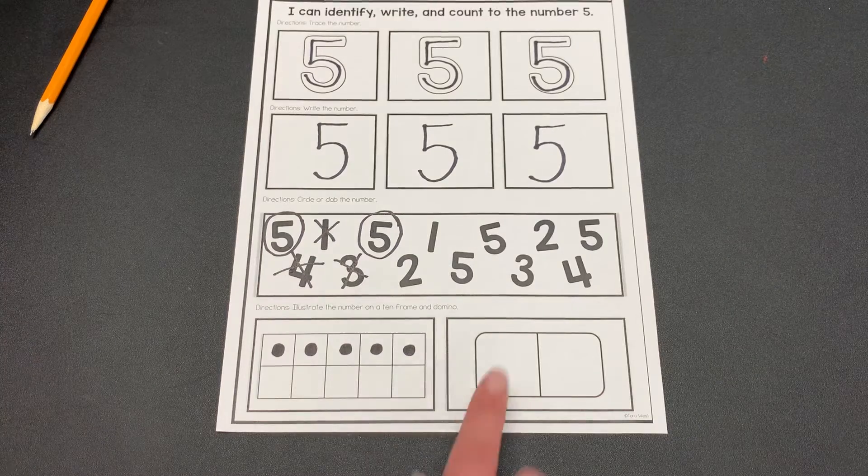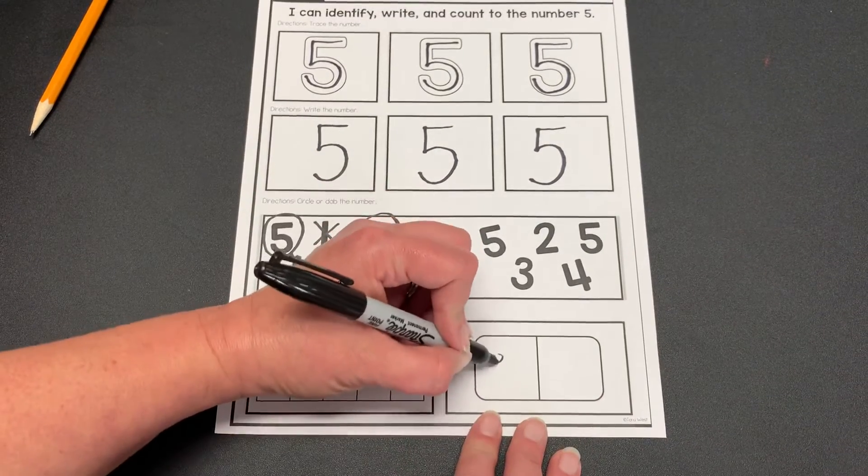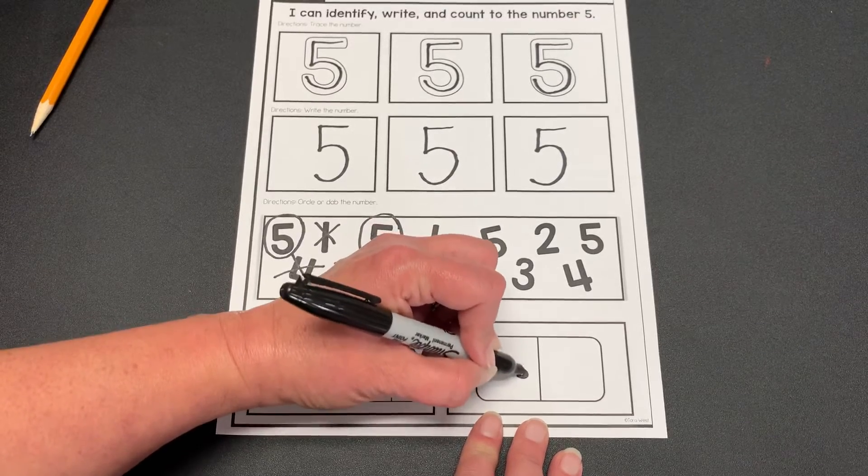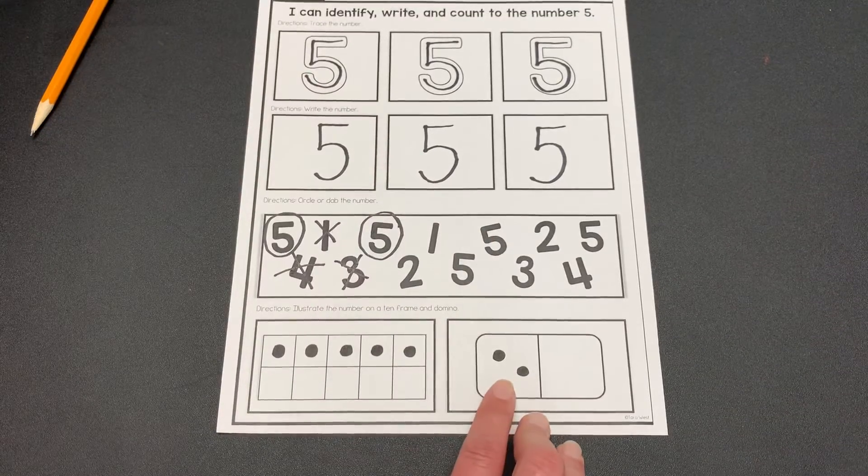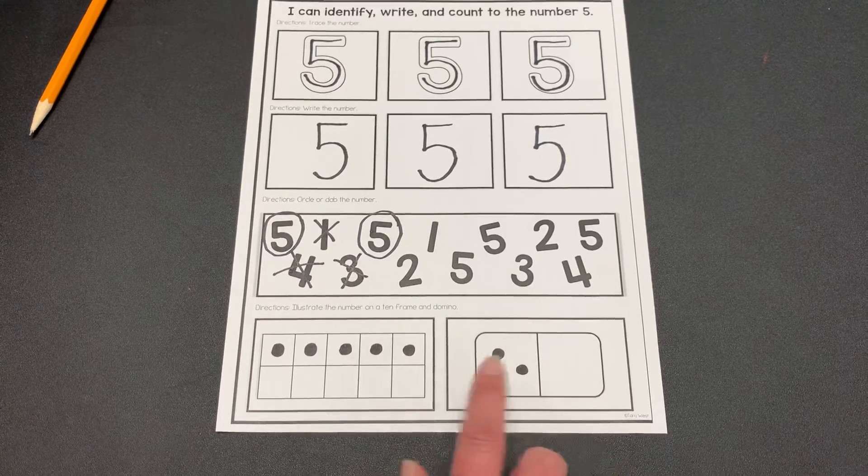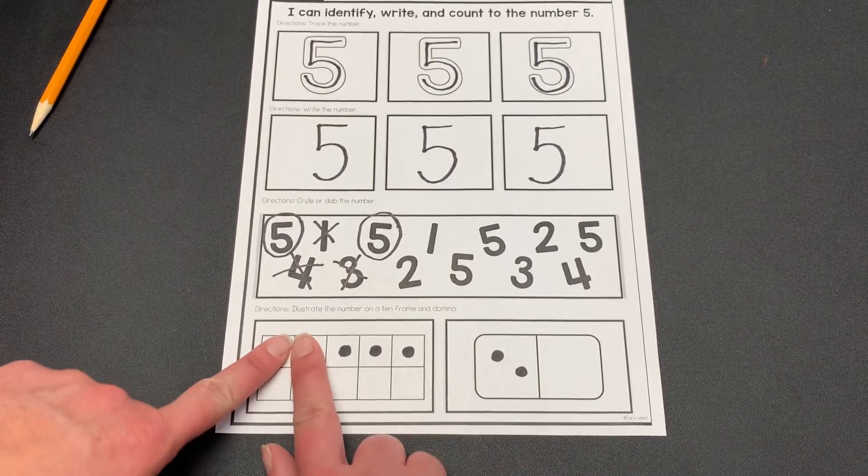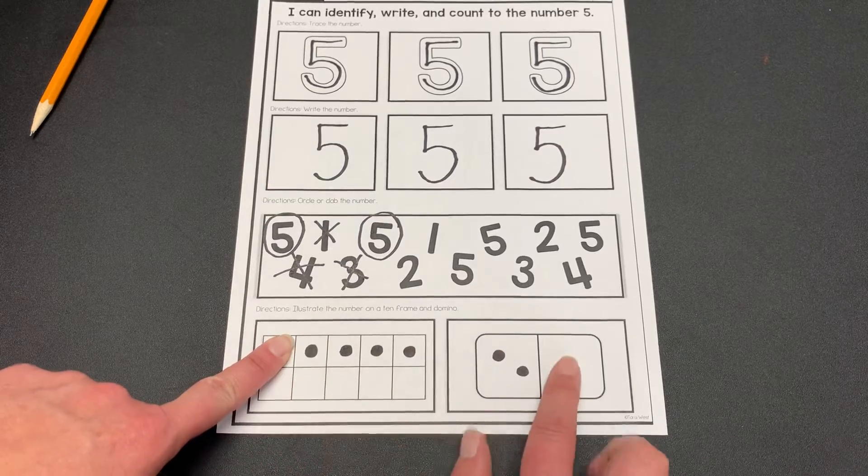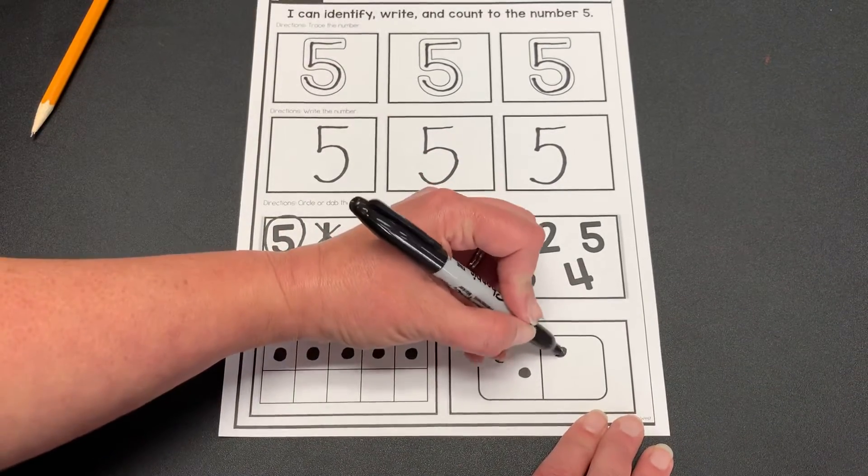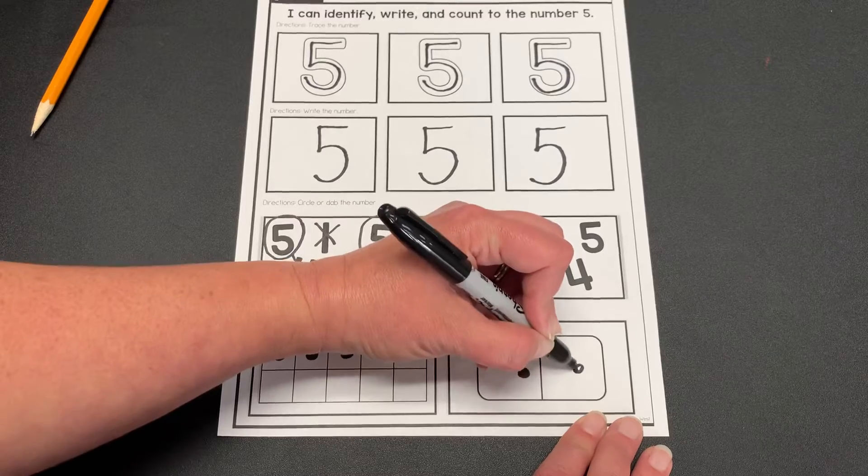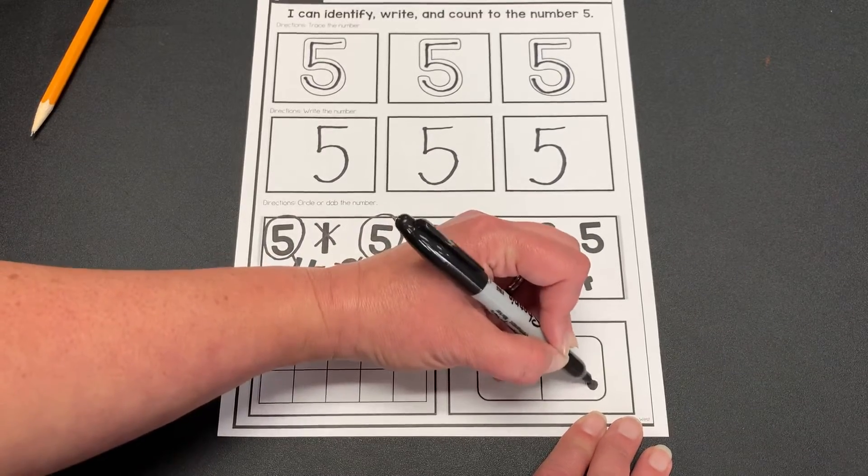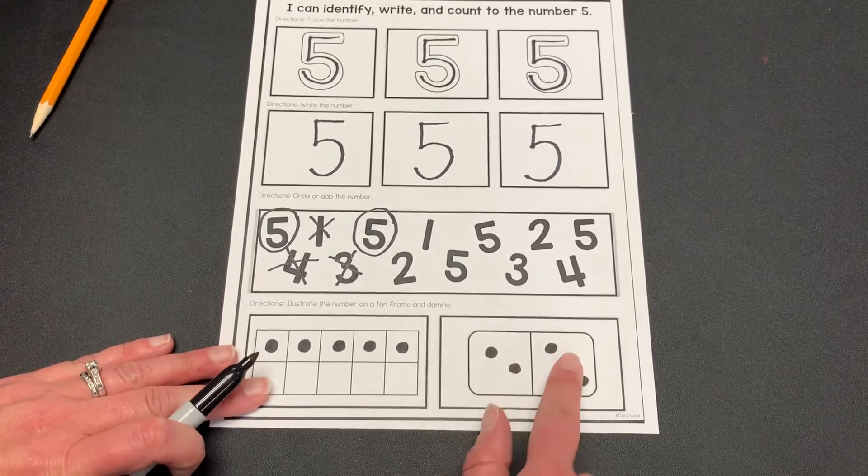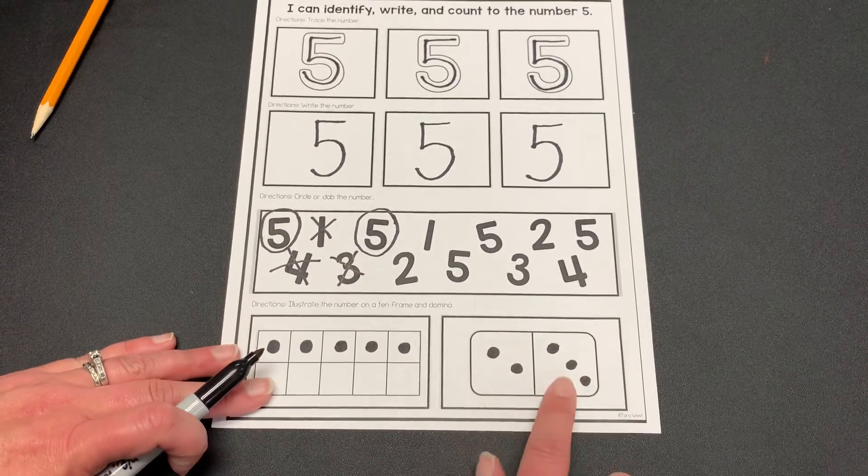Let's see. I'm going to start with, maybe I'll do two over here. One, two. But then how many would be left? Let's see. If I already did two. Oh, there's one, two, three left over. So I'm going to do three over here. One, two, three. So one, two, three, four, five. Two and three make five.